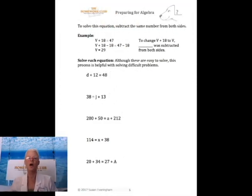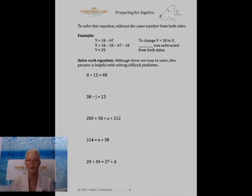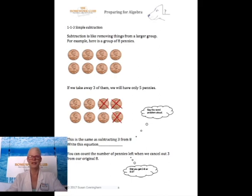Page five. To solve these equations, it's the same as the addition ones, except we're going to subtract the same number from both sides. So v + 18 = 47. Now to get v by itself, we're going to subtract 18 from both sides. So v + 18 - 18 being zero equals 47 - 18, which is 29. I want you to go ahead and finish the few problems on this page. It's the process that's helpful once we get to more difficult problems.